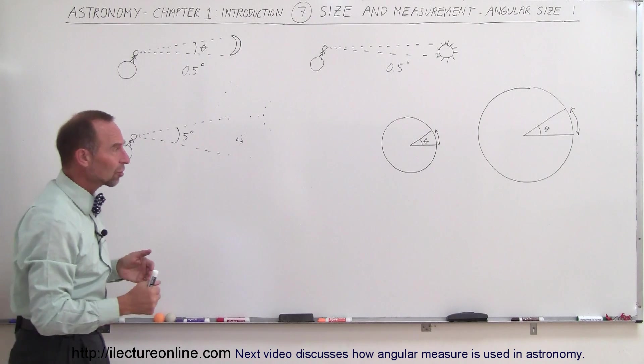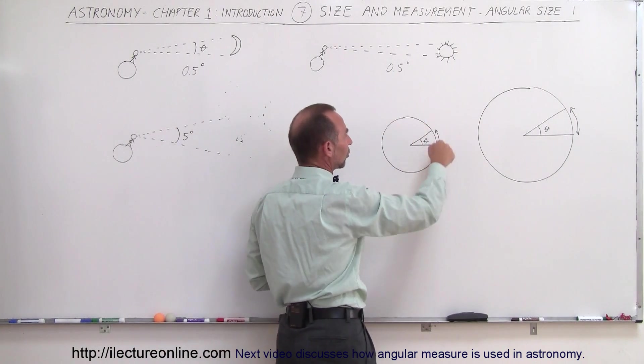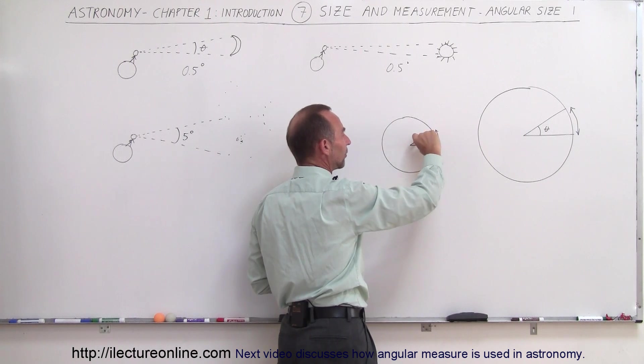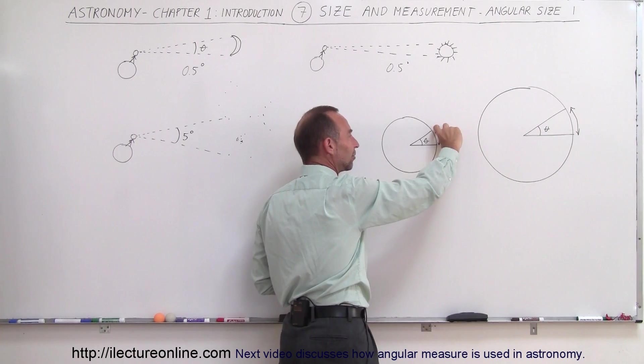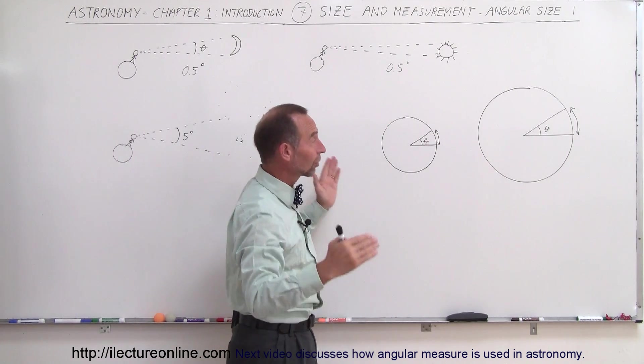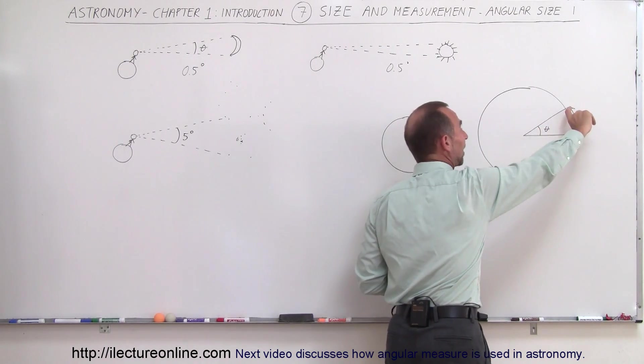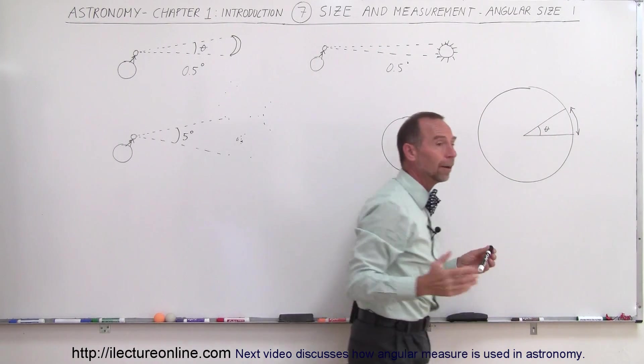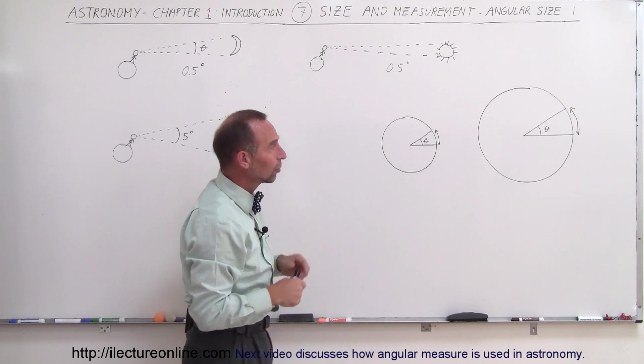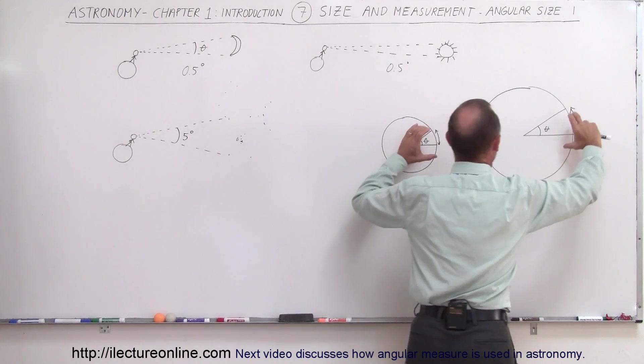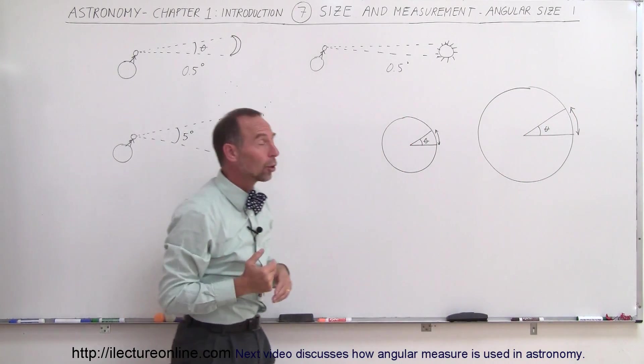What we have to keep in mind with astronomy and angle measurements is that if you have a small circle here and make an angle theta this big, on the edge of the circle it makes an arc length about that size. But if the circle is bigger, so the edge is farther away, for the same angle you have a much longer arc length. So two different objects of different size can have the same angular measure depending upon where they're located.